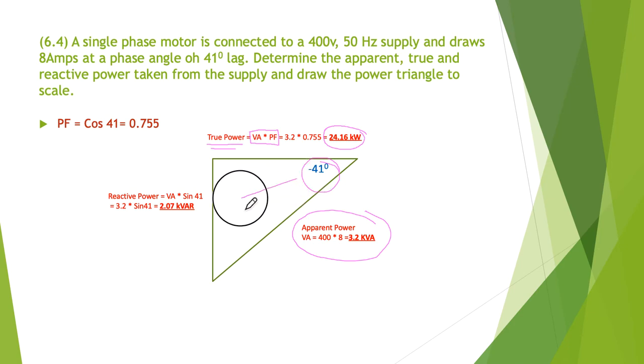To get the opposite side rather than the tangential side, we use the same formula except we use the sine of the angle this time. So 3.2 times sine 41 gives us 2.07 kVAR.